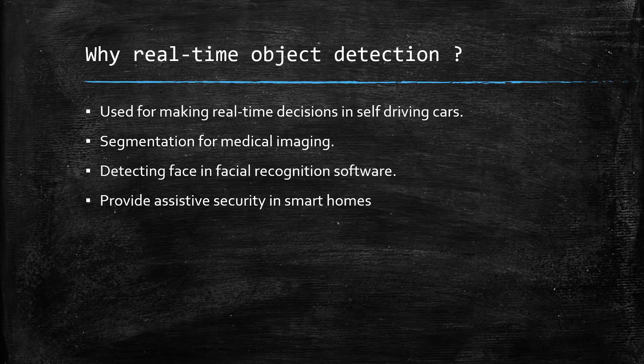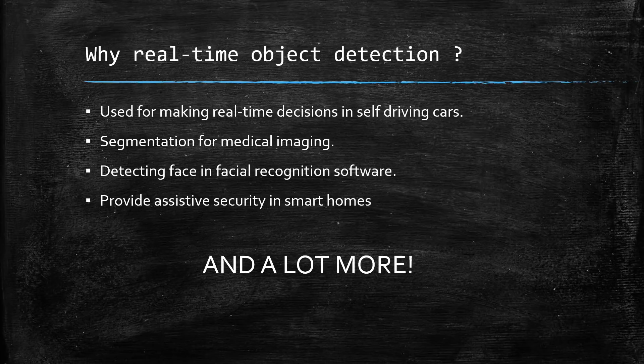Based on the recognition response, the device will either unlock or perform a particular action. Real-time object detection also provides assistive security in smart homes. For example, a doorbell camera can recognize frequent visitors, strangers, and detect unwanted activity outside your house, sending you notifications in real time. There are various other use cases as well.